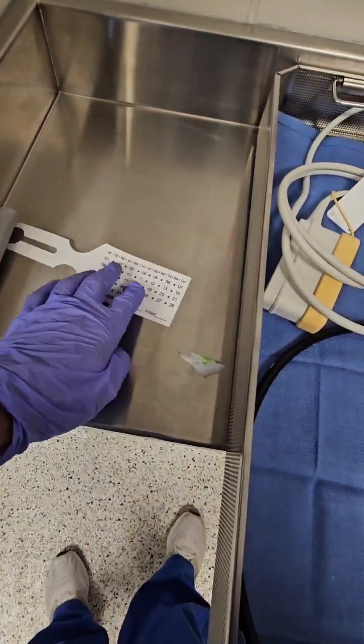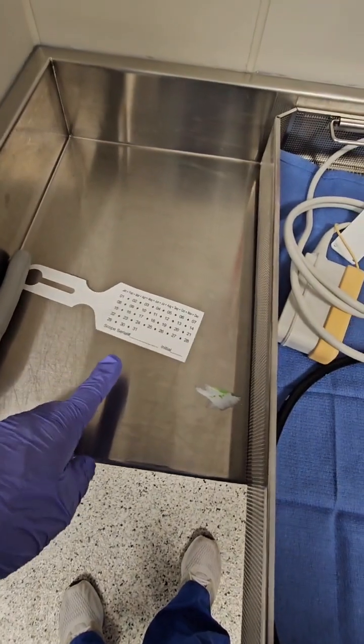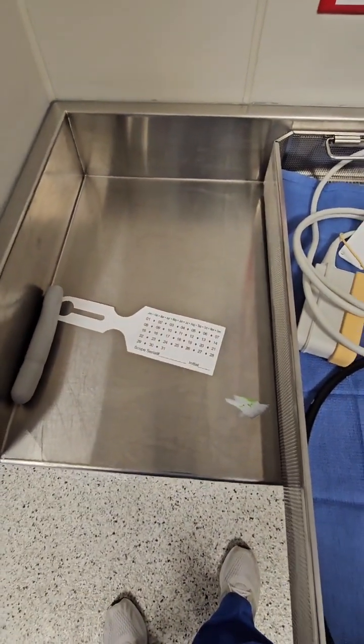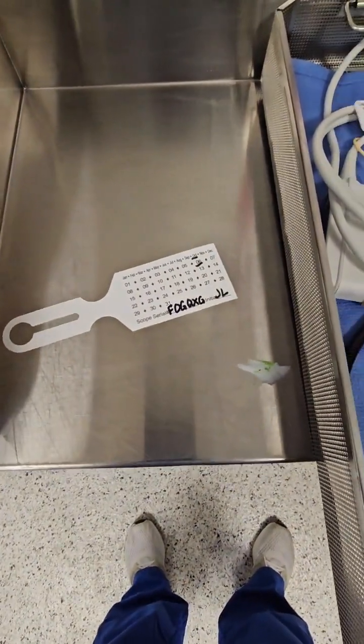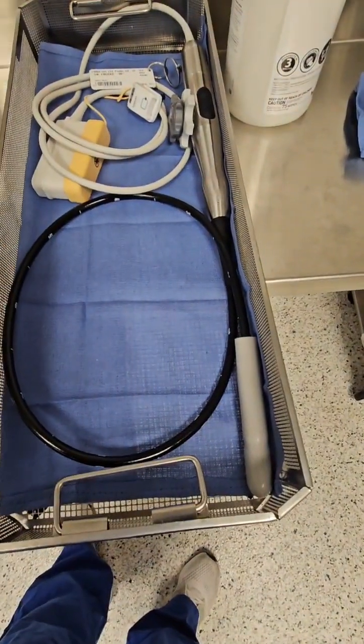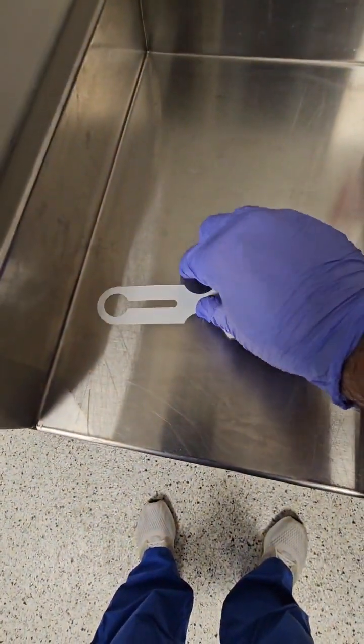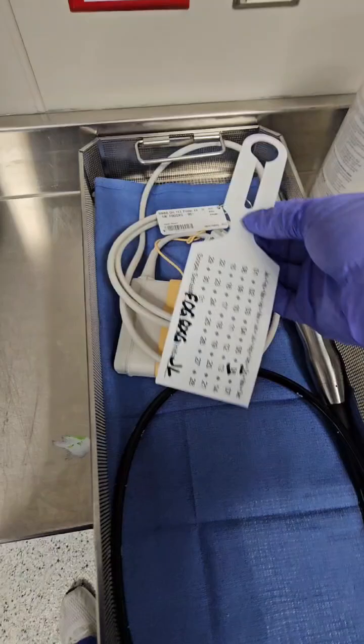We also like to put a tip protector on the actual distal portion of the insertion tube. So there's your tip protector on the distal portion there, to protect the actual ceramic eyeglass with the information on the tag there.